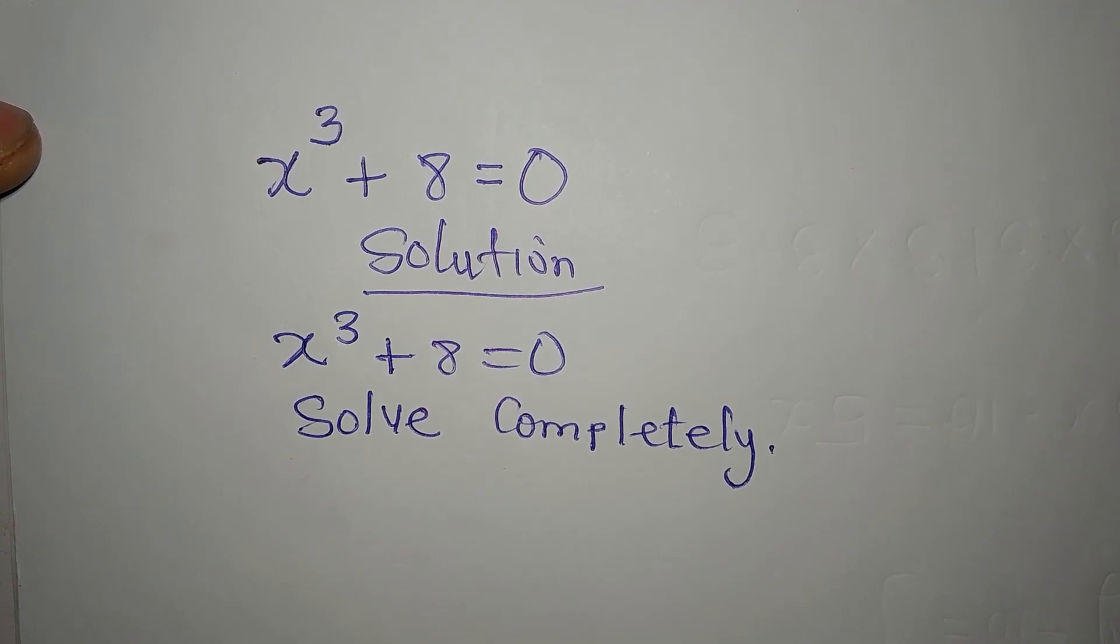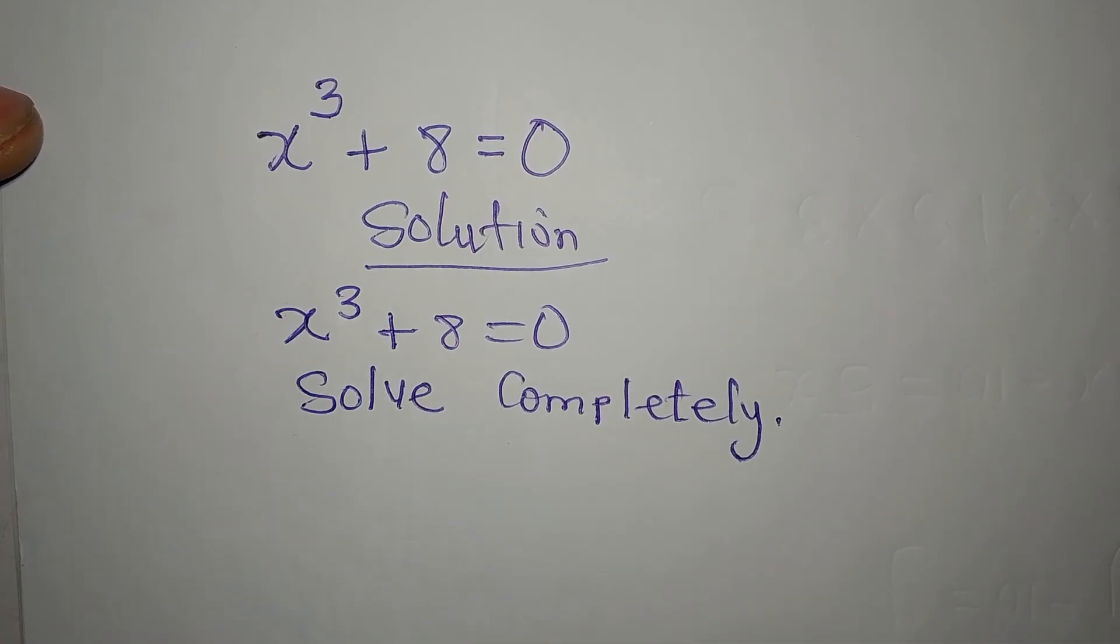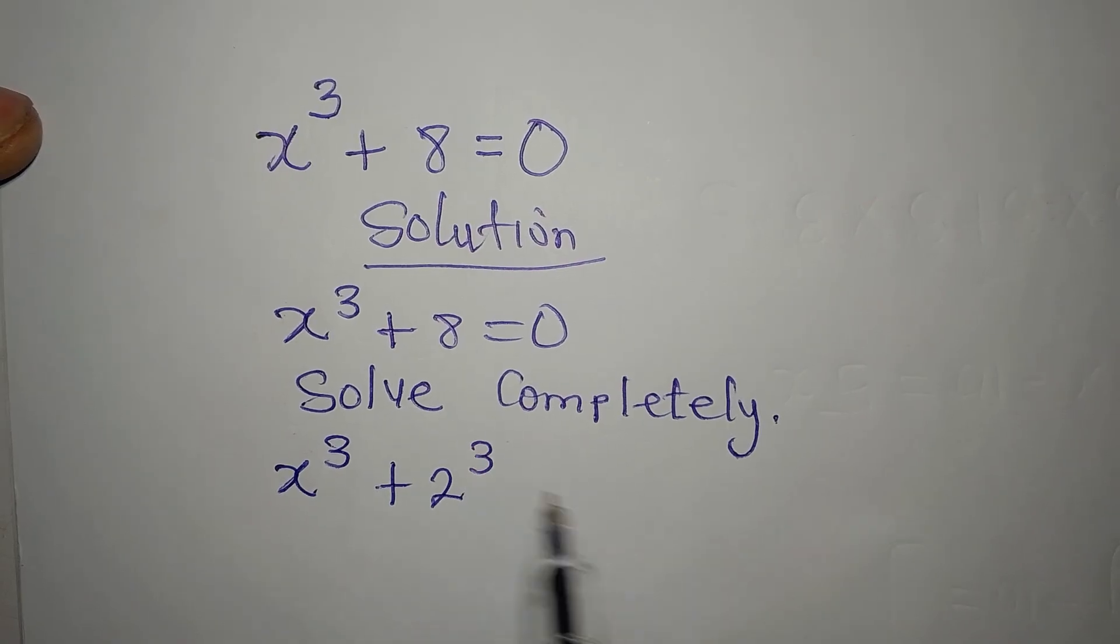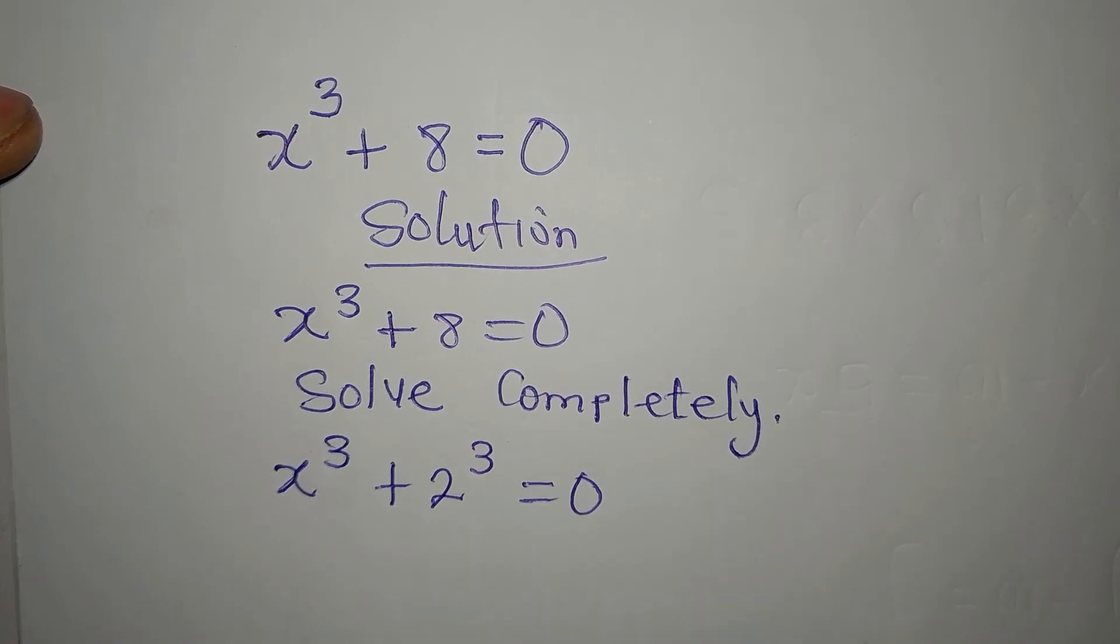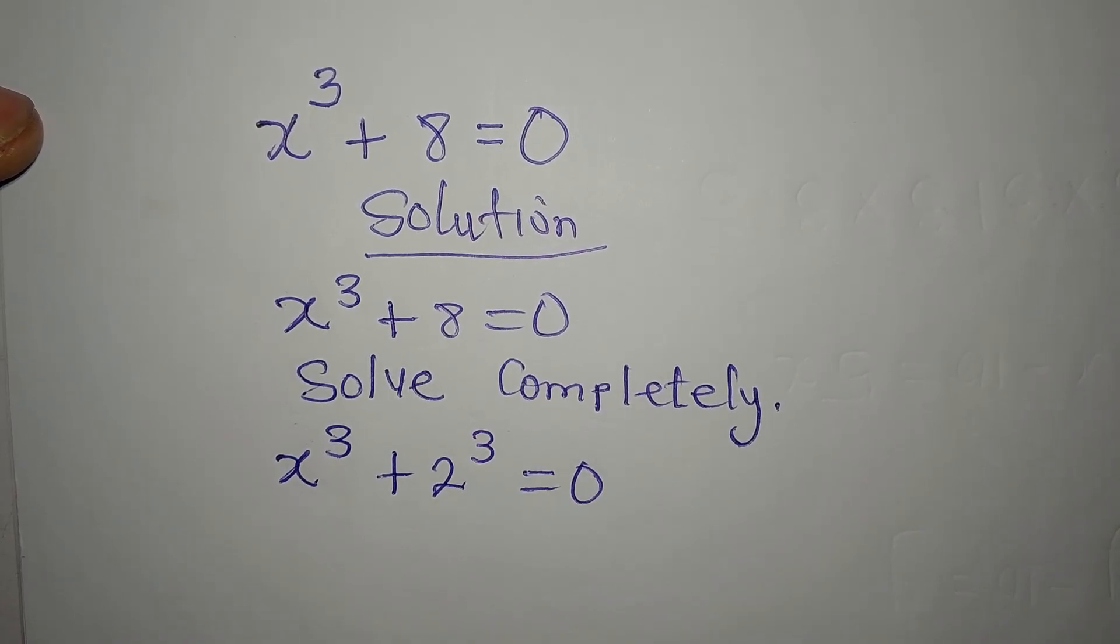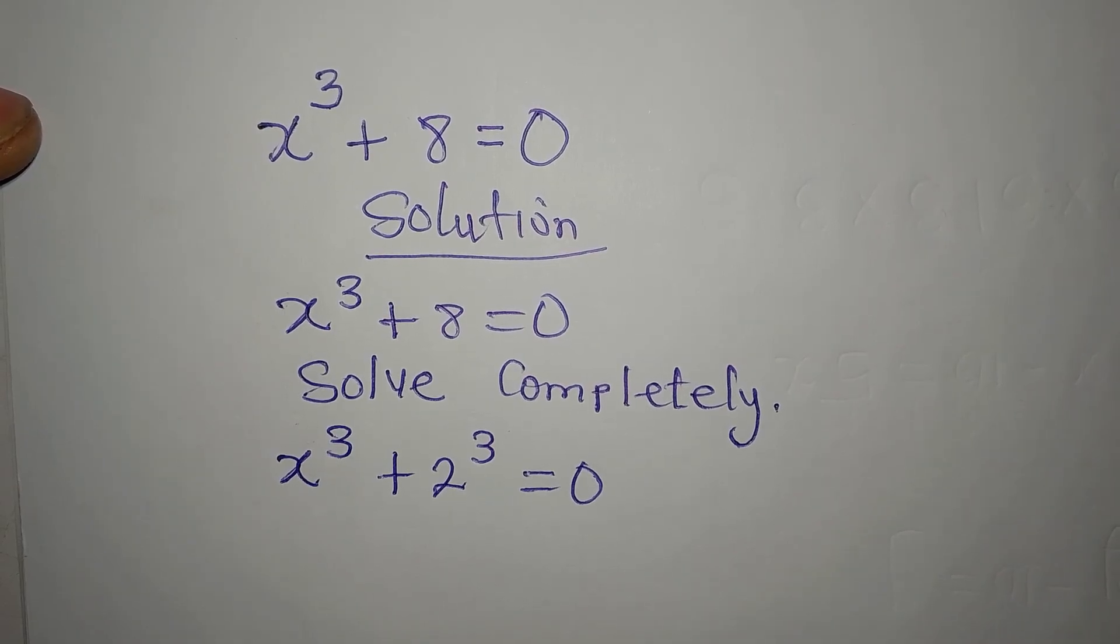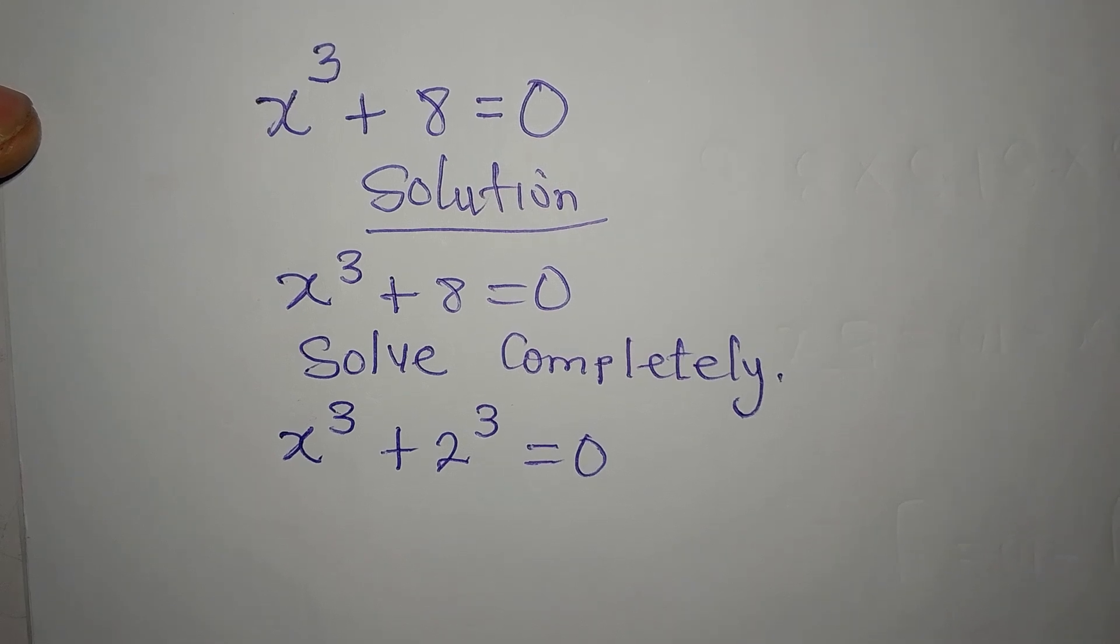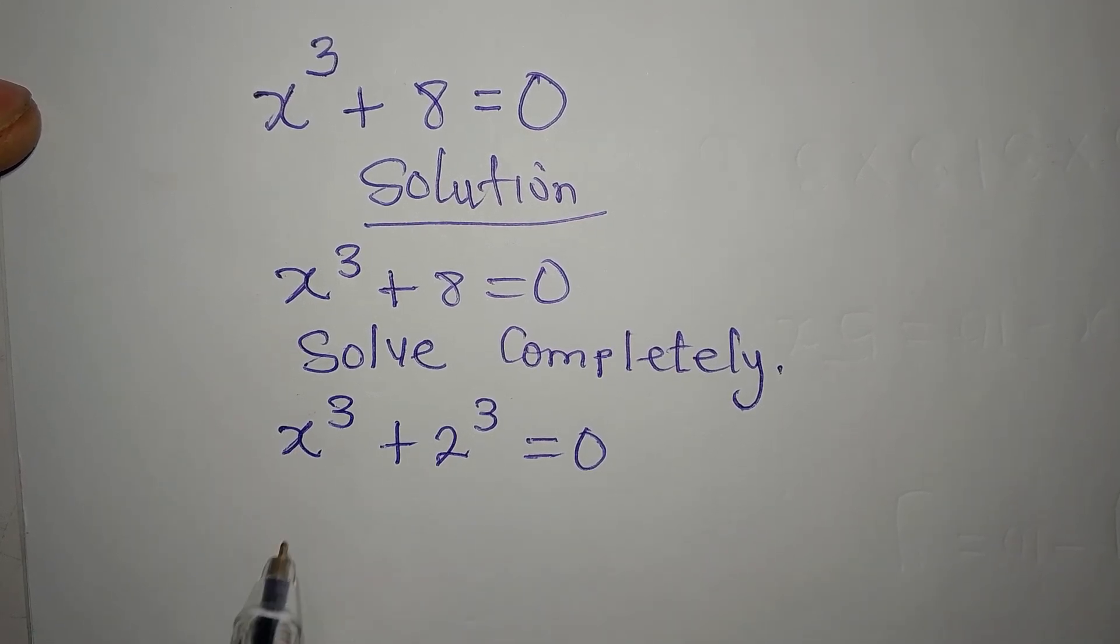So what do you do first? Let's express this in this form. So we have x to the power of 3 plus 2 to the power of 3 equals 0. Just like we have difference of two squares, we have difference of two cubes, we can equally have the sum of two cubes. Here we have sum of two cubes.